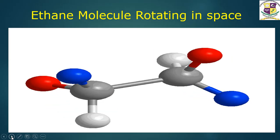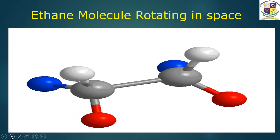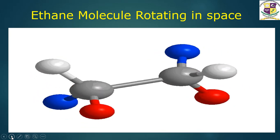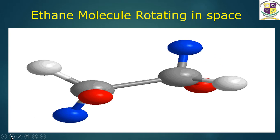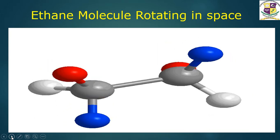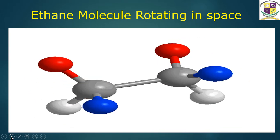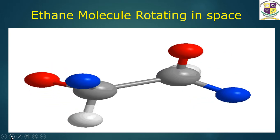You can see the ethane molecule dancing - it is rotating in space. As you know, every atom is surrounded by an electron cloud and they repel each other.